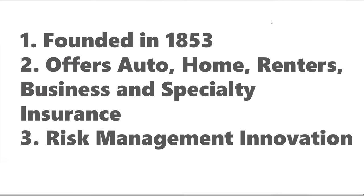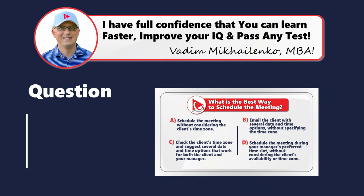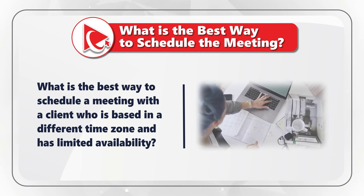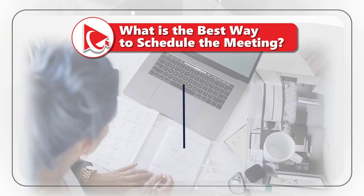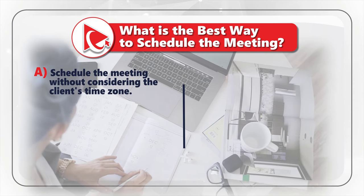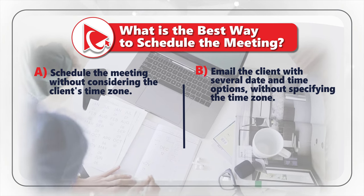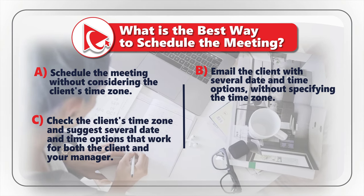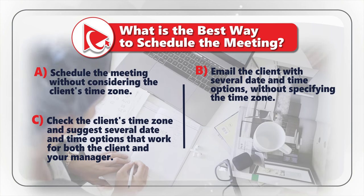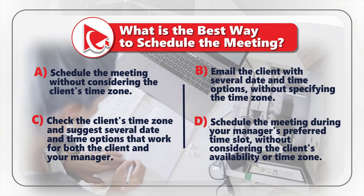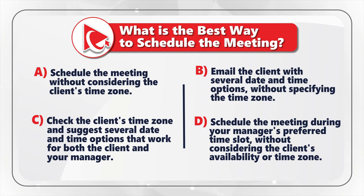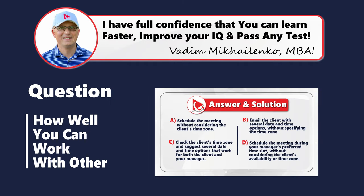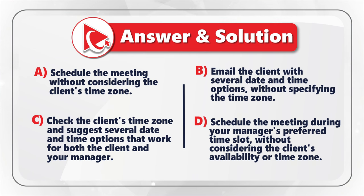Here's a very interesting question to determine how well you can work with others. You need to determine the best way to schedule a meeting with a client who is based in a different time zone and has limited availability. You need to select out of four possible choices. Choice A: schedule the meeting without considering the client's time zone. Choice B: email the client with several date and time options without specifying the time zone. Choice C: check the client's time zone and suggest several date and time options that work for both the client and your manager. Choice D: schedule the meeting during your manager's preferred time slot without considering the client's availability or time zone.